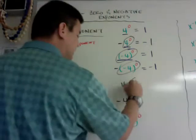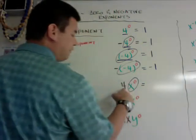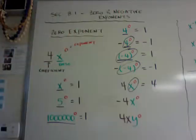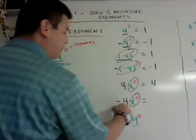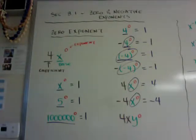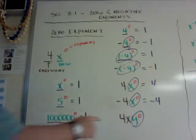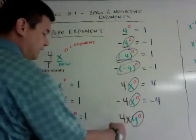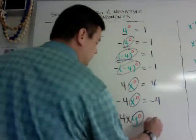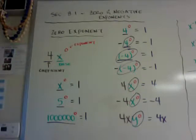On this one, x to the zero is my base, so I leave the 4 — it's like saying 4 times 1, which equals 4. And in this case, x to the zero power again, so it's negative 4 times 1, which is negative 4. On this one, y goes to zero, 4 is the coefficient, but x — because it's not to the zero power — just stays. It's like saying 4 times x times 1, which is just 4x. So whatever goes to the zero power becomes 1, only that base. Everything else stays the same.